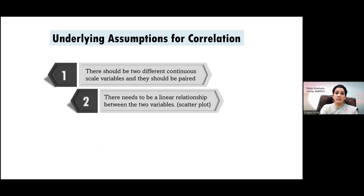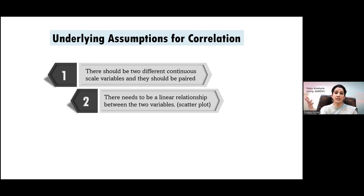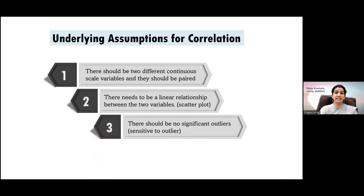There needs to be a linear relationship between the two variables, assessed by a scatter plot. JAMOVI plots the scatter plot in the same window, so you can see whether there is a linear relationship or not. If there is no linear relationship, this assumption is violated and you need to go for another test. There should also not be any significant outlier, as bivariate correlations are very sensitive to outliers — a few outliers are okay, but not too many.